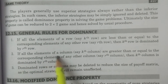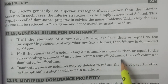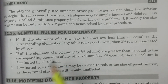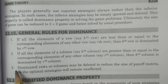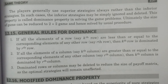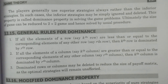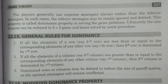Rule two: if all the elements of a column, say the kth column, are greater than or equal to the corresponding elements of any other column, say the rth column, then the kth column is dominated by the rth column. Rule three: dominated rows or columns may be deleted to reduce the size of the payoff matrix, as the optimal strategies will remain unaffected. These are the three principles of dominance.